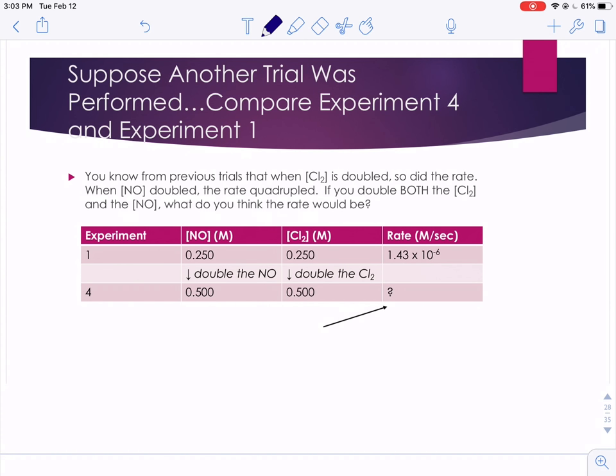If we did another trial, experiment 4, this time we know from previous trials that when chlorine is doubled, so did the rate, and when nitrogen monoxide was doubled, the rate quadrupled. So if we double both of them, what do you think would happen? What do you think would happen to the rate?